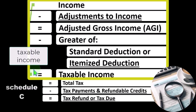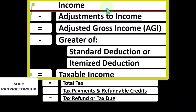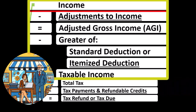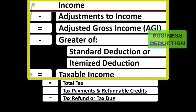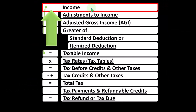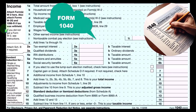The Schedule C rolls into line one income of the formula, which is a little funny because the sole proprietorship Schedule C is basically itself an income statement — having business income minus business expenses, otherwise known as business deductions, resulting in net business income, which rolls into line one income of the income tax formula, basically reflecting the underlying calculation of page one of the 1040.